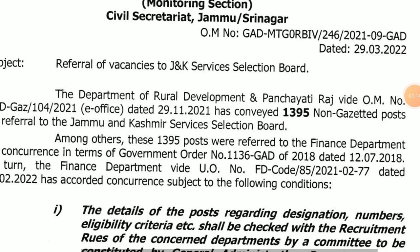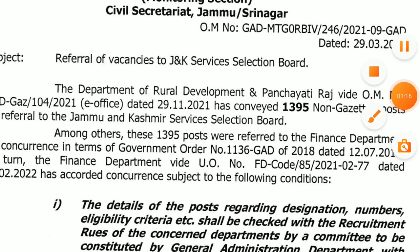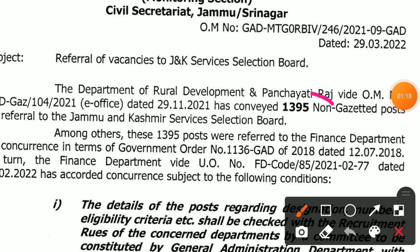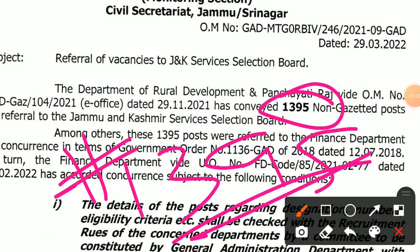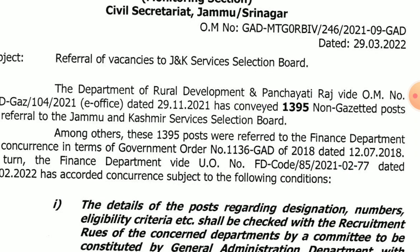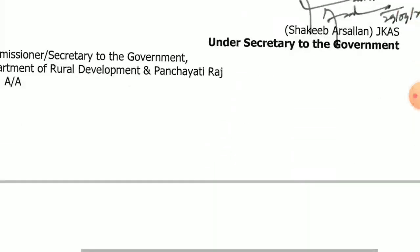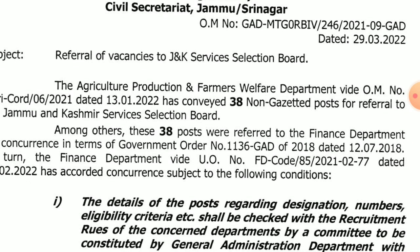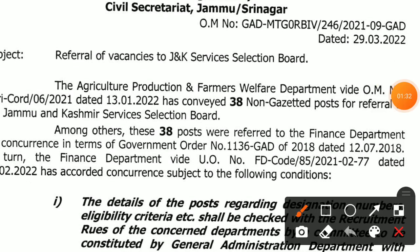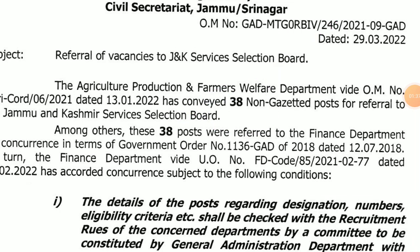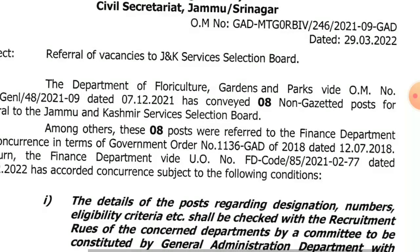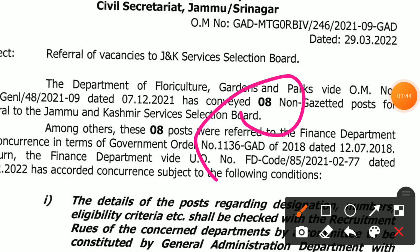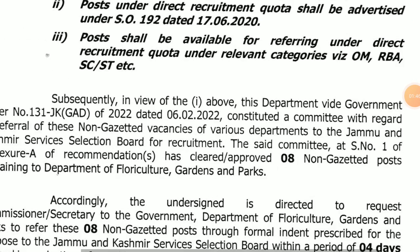The Department of Rural Development and Panchayati Raj has the biggest recruitment — 1395 posts. Agriculture Production and Farmers Welfare Department has 38 posts. The Department of Floriculture, Gardens and Parks has 8 non-gazetted posts.